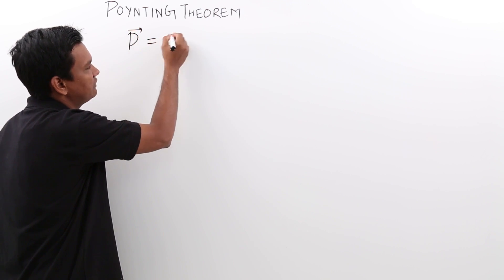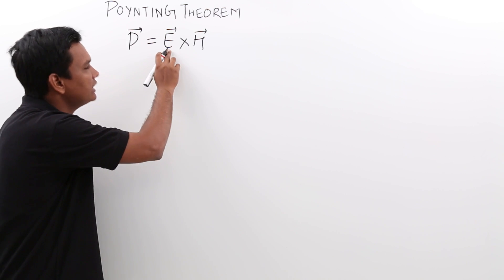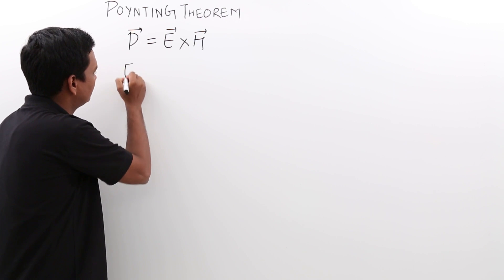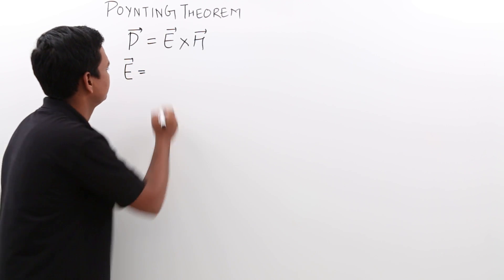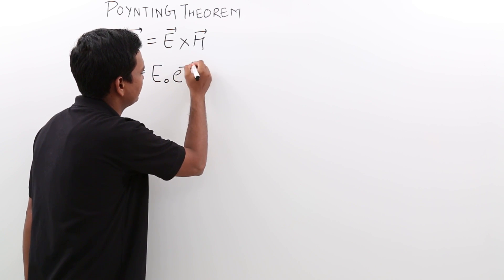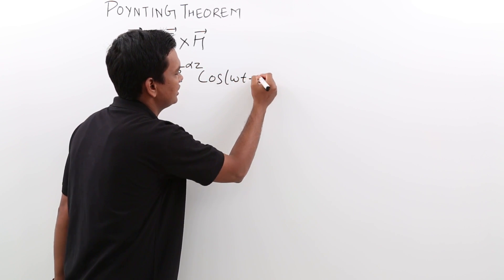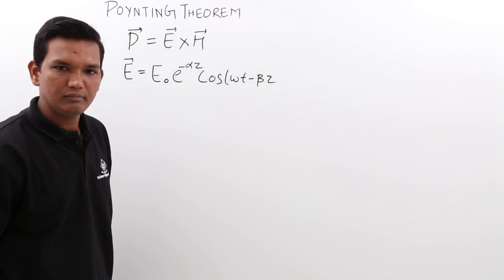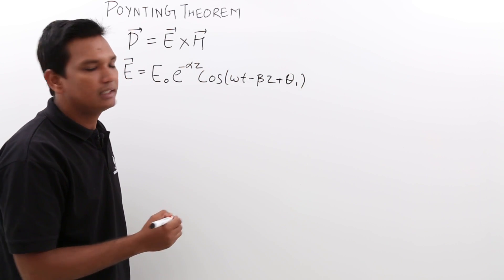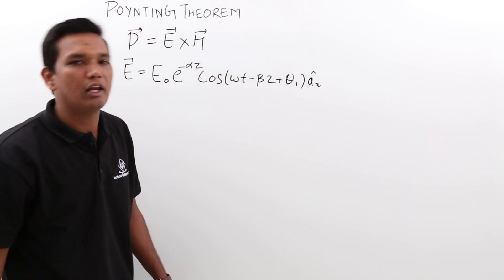The Poynting vector P is given by E vector cross H vector. E is the electric field and H is the magnetic field. Let me take the electric field by a general equation: E equal to E-naught e to the power minus alpha-z, cos(omega-t minus beta-z plus theta-1), directed along the x-axis (A x-cap).